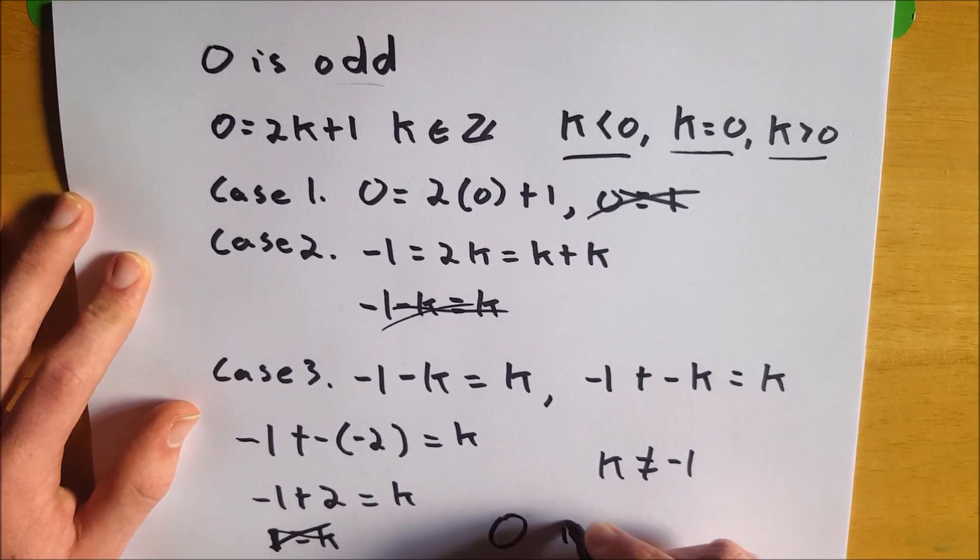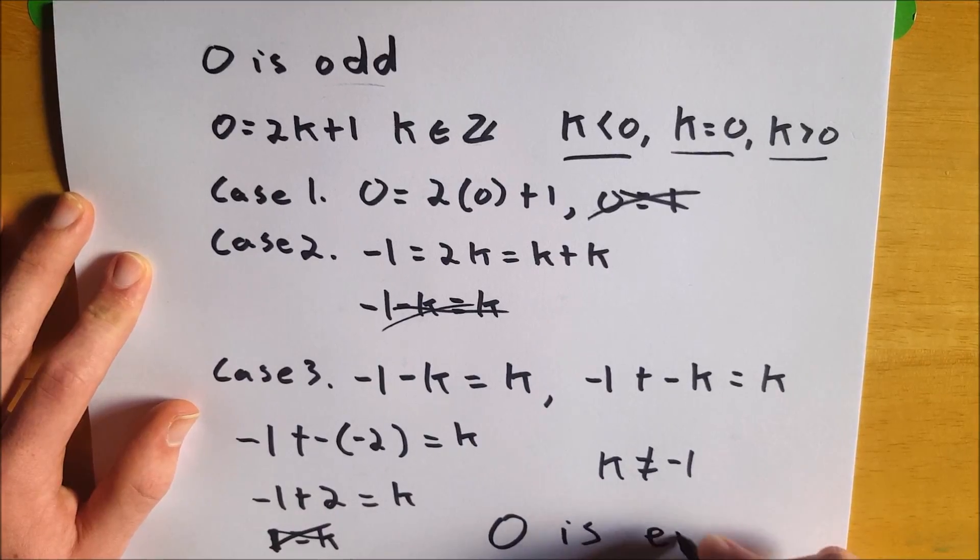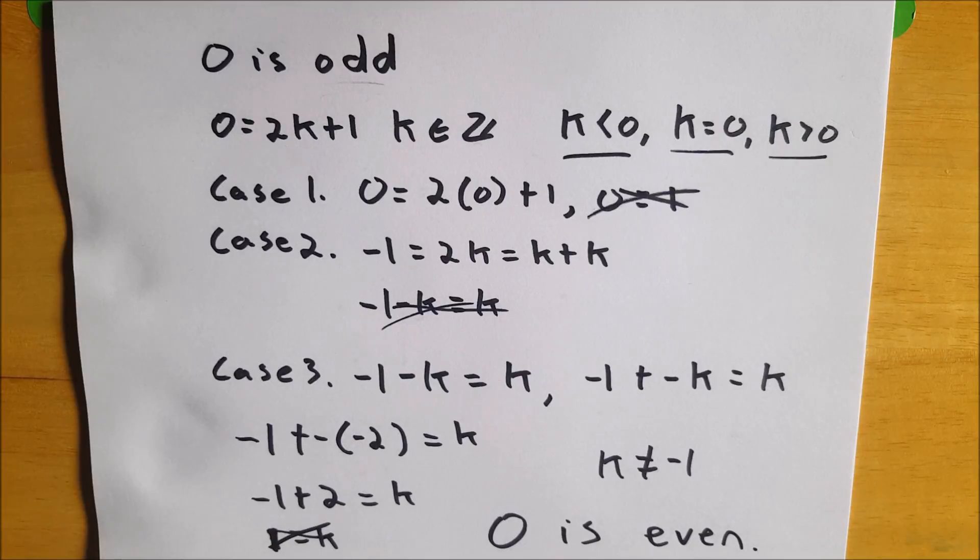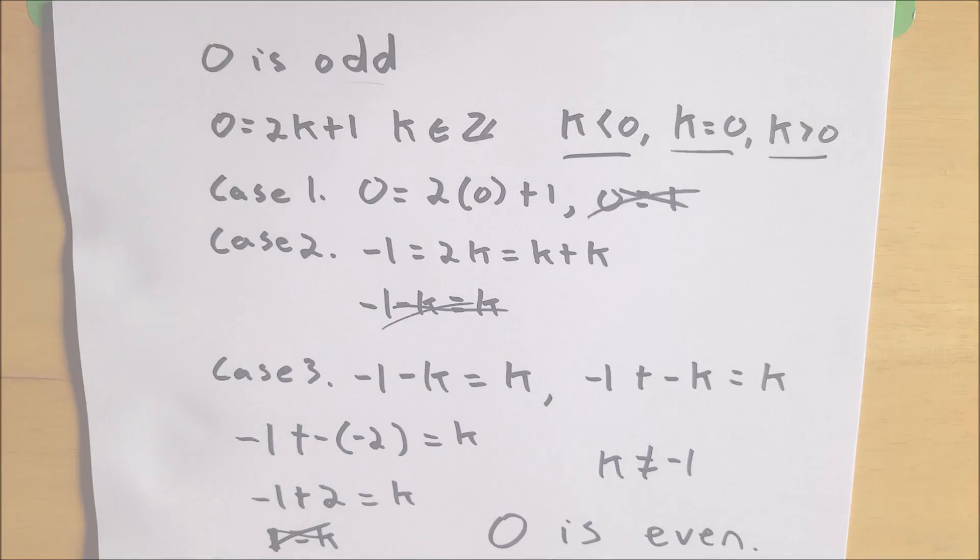And therefore, by contradiction, zero is even. So I hope you enjoyed that little roundabout way of proving that zero is even. If you have any questions about what I did in this proof, let me know in the comments. Tell me if there's any other topics you'd like to see covered. I'll see you next time. Thanks a lot for watching, and be sure to subscribe for the swankiest math videos on the internet.